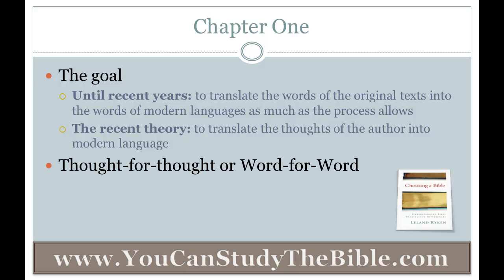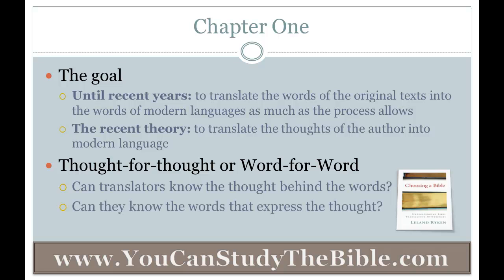The second section of chapter 1 addresses thought-for-thought versus word-for-word translation. The author argues we should favor word-for-word. The key question is: can translators know the thought behind the words — can they claim the authority to say God must have been thinking X or Y and translate accordingly rather than translating what he said? Translators cannot know the thought behind the words, but they can know the words that express the thought. Therefore, the argument for word-for-word translation is the more solid one.